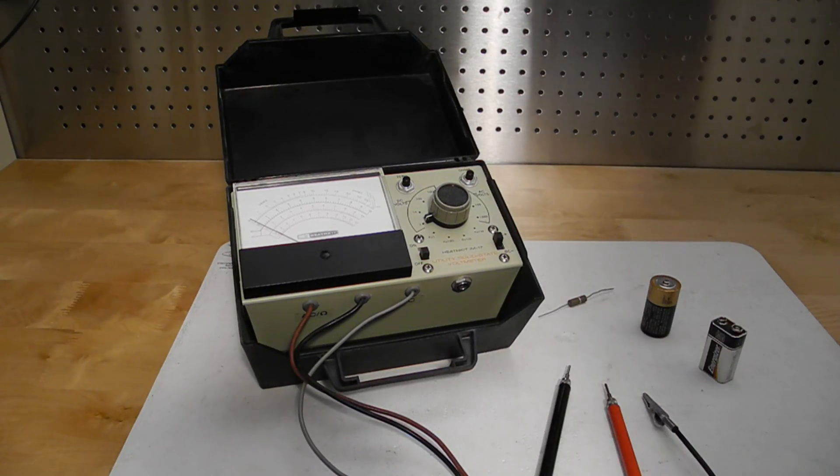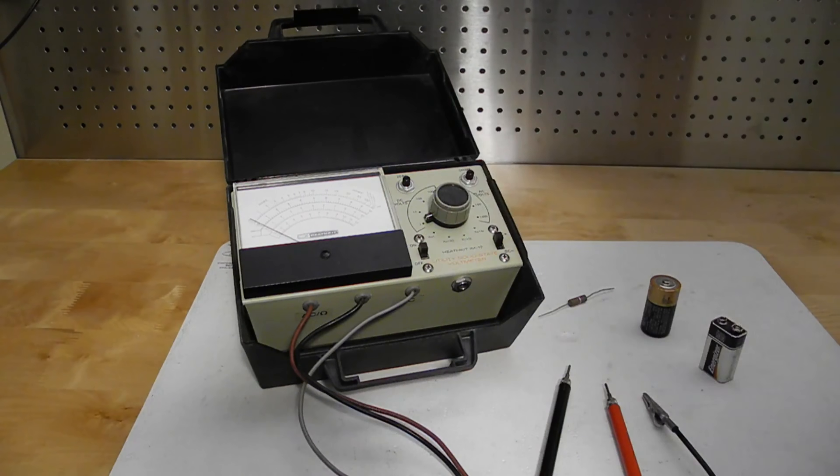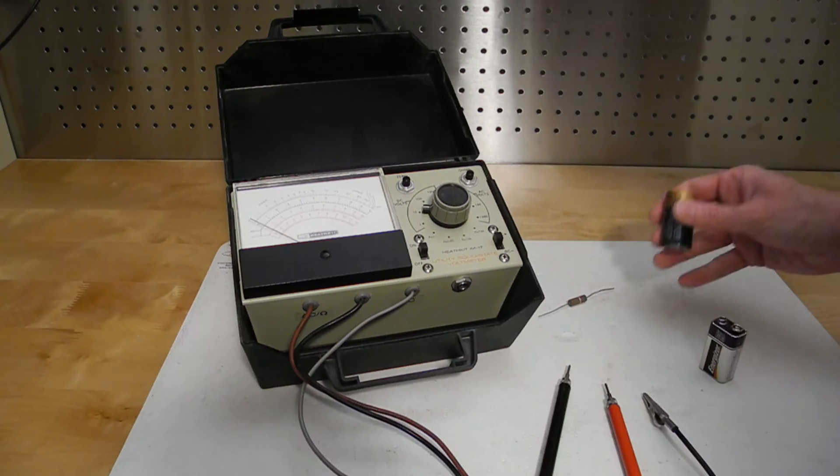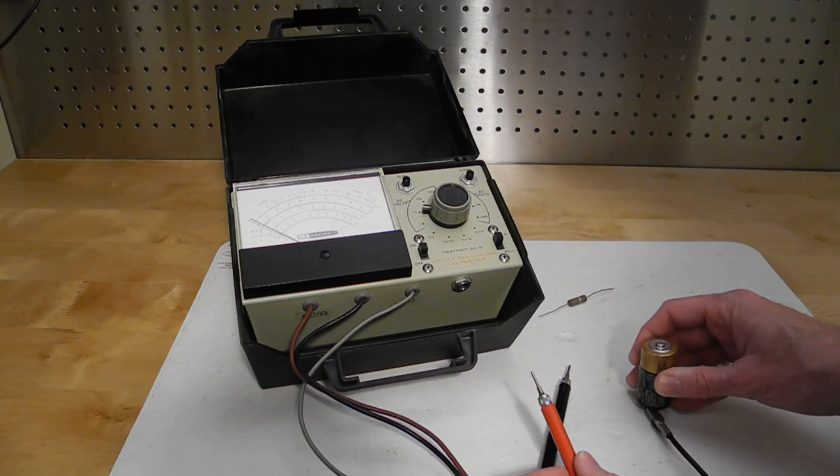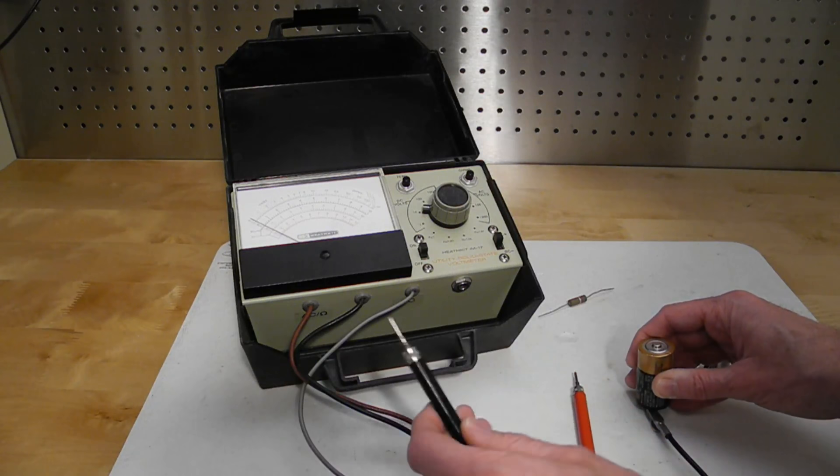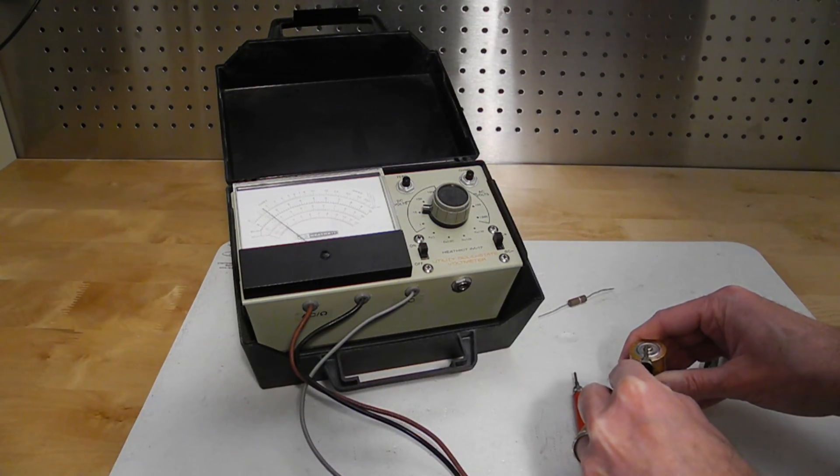As a simple demonstration, let's measure the voltage of a couple of batteries and a resistor. So first a couple of batteries, we turn the unit on and set it to the 10 volt range. I'm going to measure first a 1.5 volt battery. So we use the common lead and the DC lead. So on the 10 volt range here, the 1.5 volt battery is reading just a little over 1.5 volts.